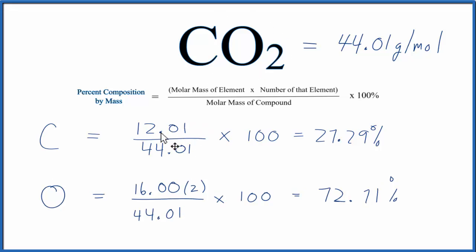Note that my periodic table rounds to two digits after the decimal point, so my answer might not be exactly 100%, but it should be very close. This is Dr. B with the percent composition by mass for CO2 carbon dioxide. Thanks for watching.